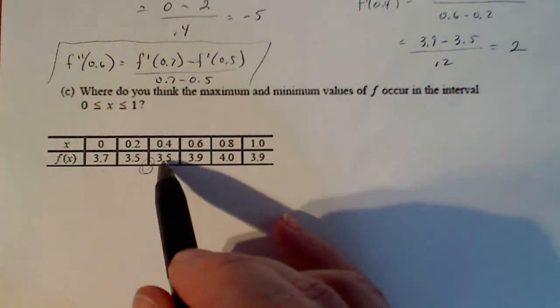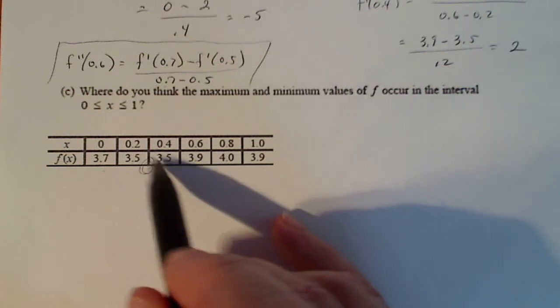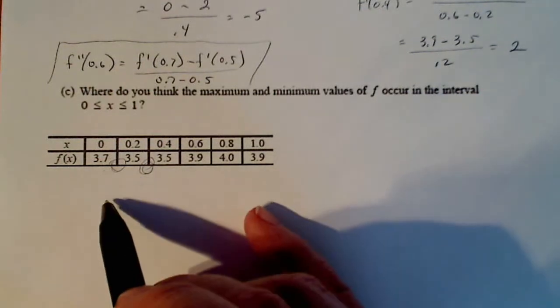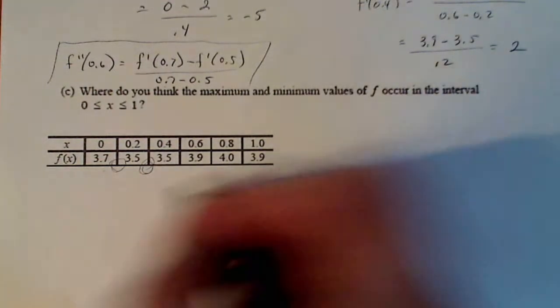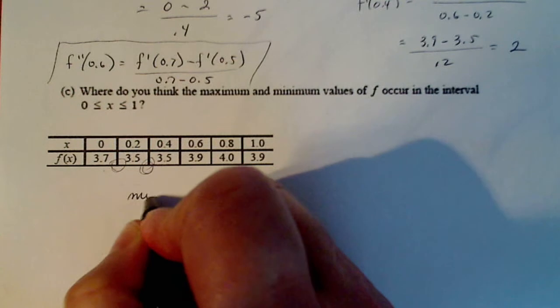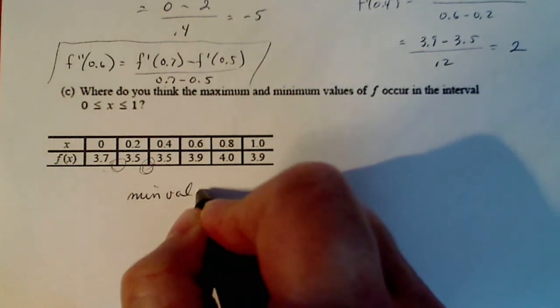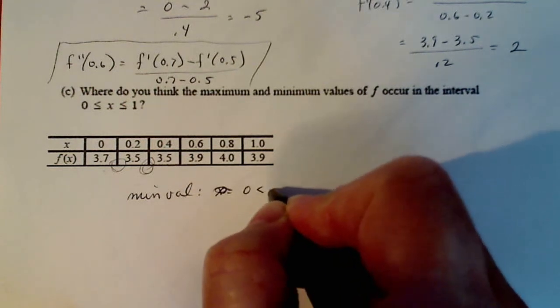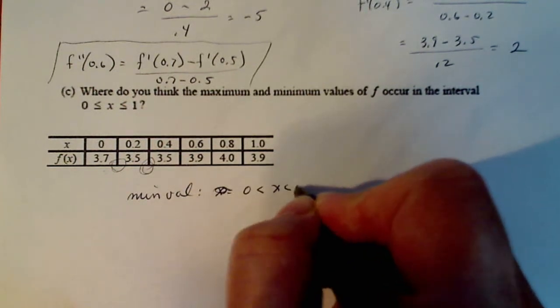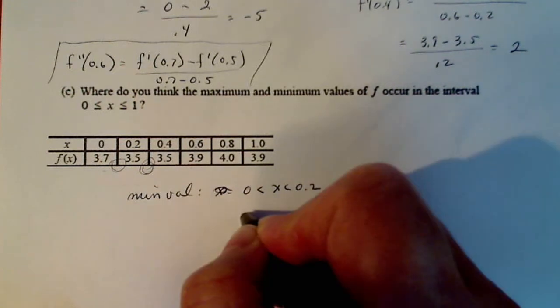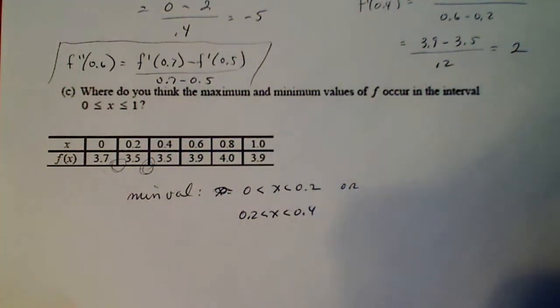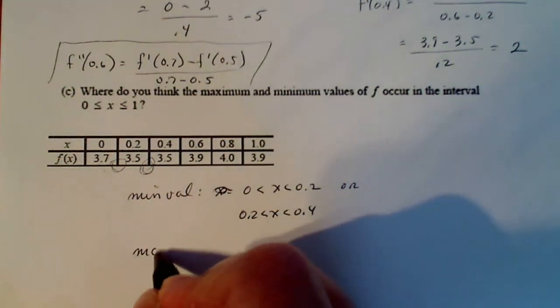It could decrease and go back up here or could increase and go back down. So there could be one here or there could be a low one here. So you could say the minimum value could occur either at x between 0 and 0.2 or x between 0.2 and 0.4. I think either one is going to be correct.